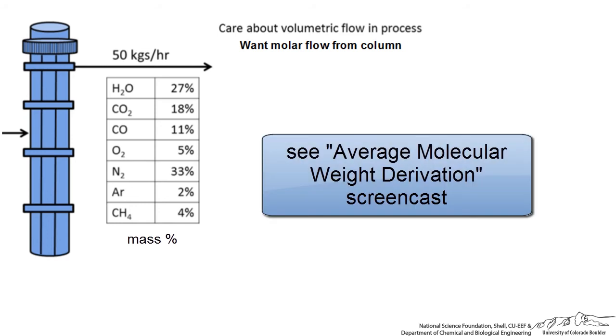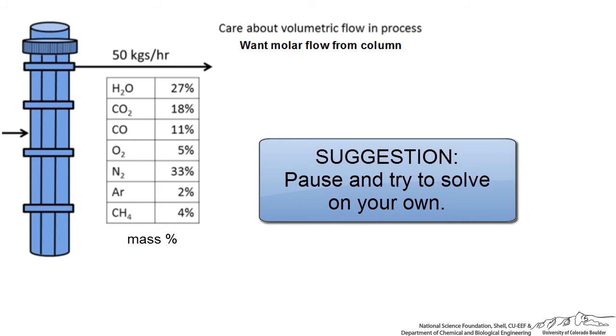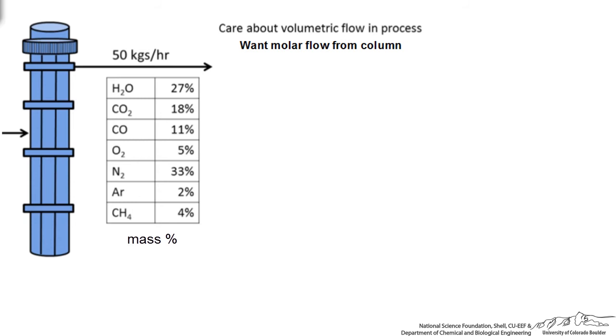Let's do that given information we have worked out in previous screencasts. If we have 50 kg per hour leaving the column and we divide this by our average molecular weight of our mixture, and this is going to be in kg per kmol, then this will give us kmol per hour. So we need to figure out what our average molecular weight is.